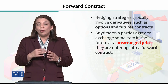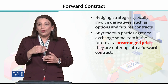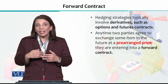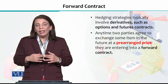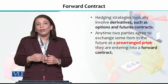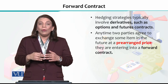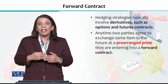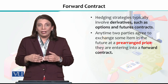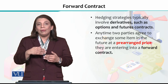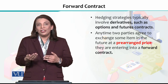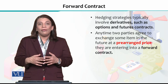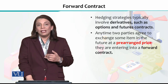When hedging, we use derivatives — we use different types of future contracts and forward contracts. A forward contract is basically a contract in which the agreement is made now, but the contract will be executed in the future. That is why we call this particular contract a forward contract.